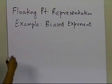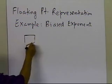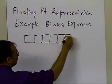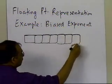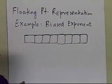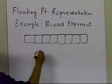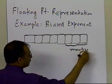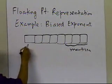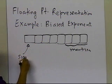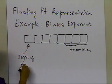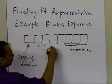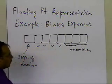Let's suppose somebody gives us an 8-bit word, so we have 1, 2, 3, 4, 5, 6, 7, 8. Let's suppose we use 3 bits for the mantissa, and we already know we've got to use 1 bit for the sign of the number. We are left with 4 bits now.